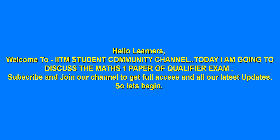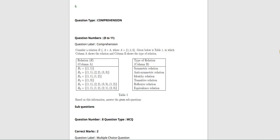Hello everyone, welcome to IITM Student Community channel. This is part two of the discussion of maths on the qualified exam paper. Here are questions number 8 to 11. A set A is given equal to {1, 2, 3} and a relation R is a subset of A cross A.